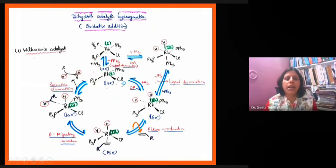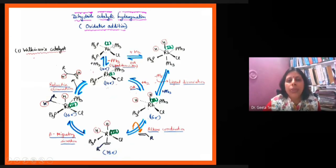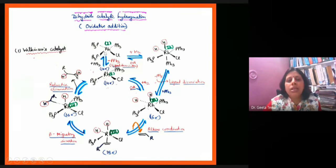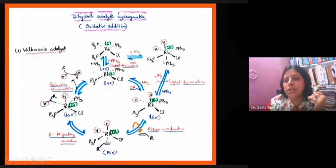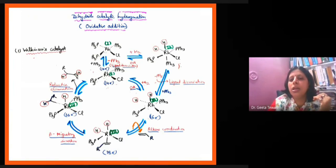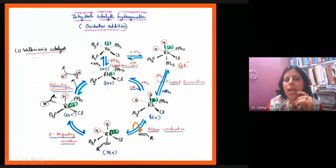Let us look at the catalytic cycle for the Wilkinson catalyst. The Wilkinson catalyst is a rhodium complex. Now you can see there are two paths. In the first path, H₂ is added directly. The rhodium is a 16-electron species, so hydrogen can undergo oxidative addition in the cis position. This produces a 6-coordinated species, the oxidation state goes from +1 to +3, and the electron count goes from 16 to 18 electrons. This is oxidative addition — the first step.